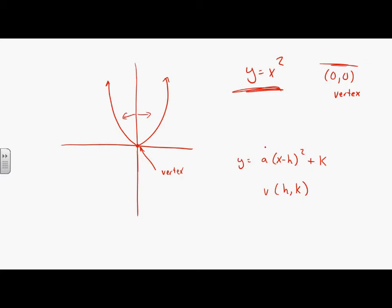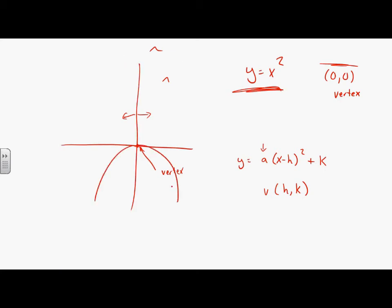The 'a' value tells you whether you have an upward or downward parabola. If a is positive, it's opening up — it's a smiley face. If a is negative, it's a frowny face, opening downward. So that's how we remember it. Let's look at an actual equation.